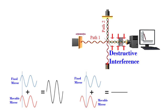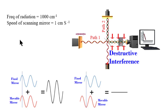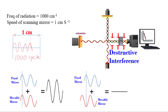From this discussion, we can say that if the scanning or moving mirror is scanned at a constant speed, a sinusoidal signal is generated at the detector. What will be the frequency of that sinusoidal signal? The frequency of the signal at the detector depends on the speed of the mirror and the wavelength of the radiation. Say the frequency of the source radiation is 1000 per centimeter and the speed of the scanning mirror is 1 centimeter per second. So there will be 1000 waves of infrared radiation per centimeter — the frequency of radiation expressed in wavenumber is 1000 per centimeter. So for 1 centimeter distance, the total number of cycles is 1000.